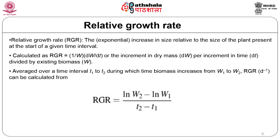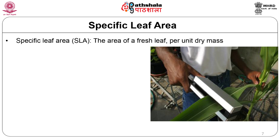RGR can be partitioned into the net assimilation rate (NAR) and the leaf area ratio (LAR). LAR is the ratio of leaf area to total plant mass. LAR can also be expressed as a product of specific leaf area (SLA) and the leaf mass ratio (LMR), which is the ratio of leaf area to leaf mass.